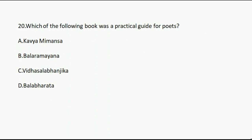Question number twenty: Which of the following books was a practical guide for poets? Option A: Kavimimamsa. Option B: Bala Ramayana. Option C: Vidyasalabanjika. Option D: Balabharata. And the correct answer is option A, Kavimimamsa.